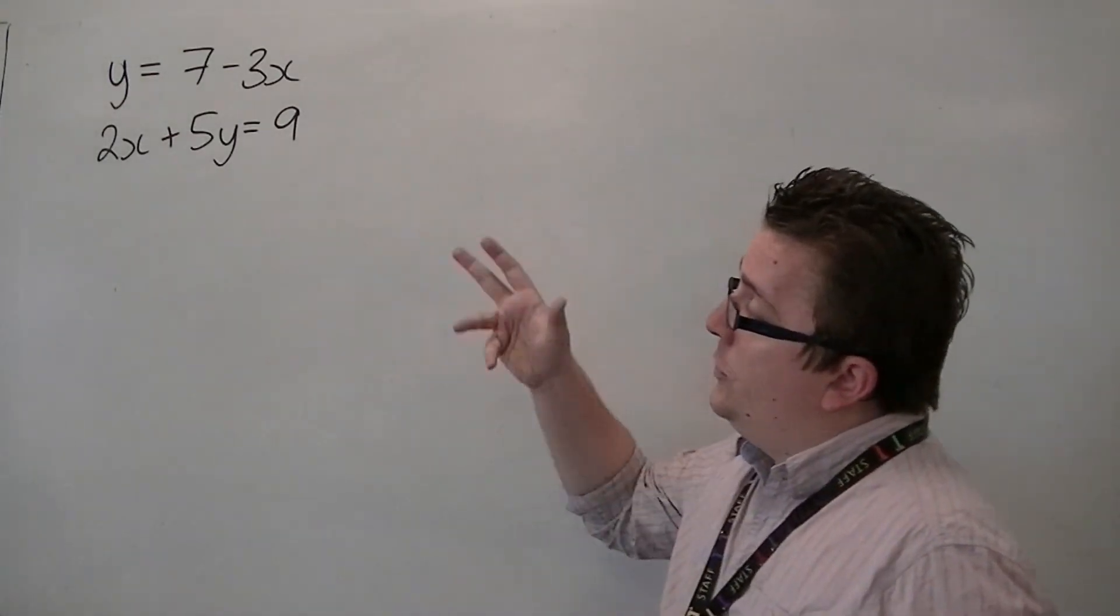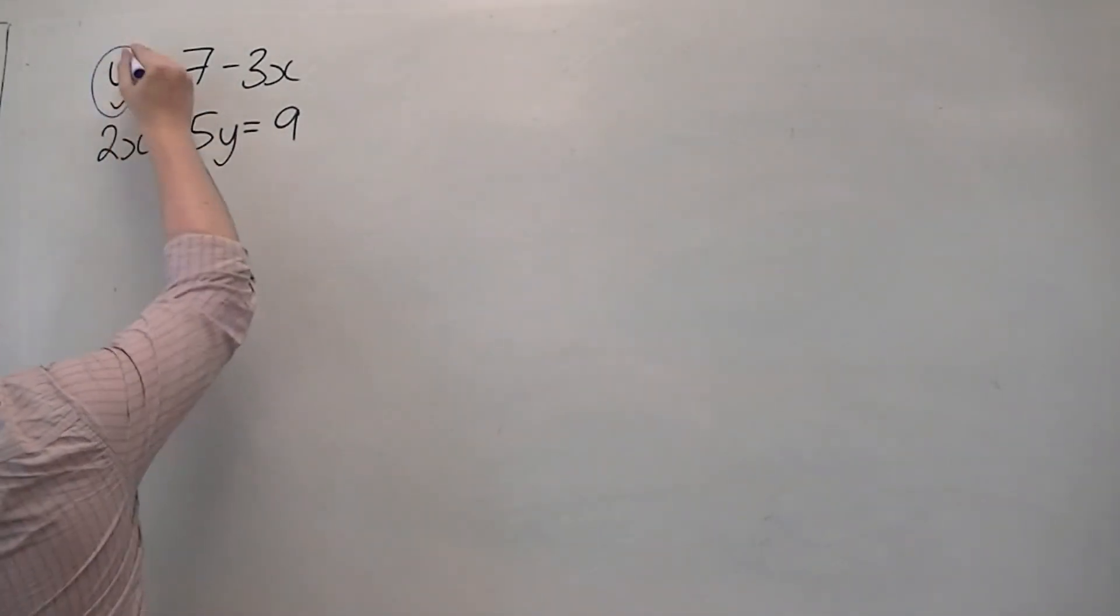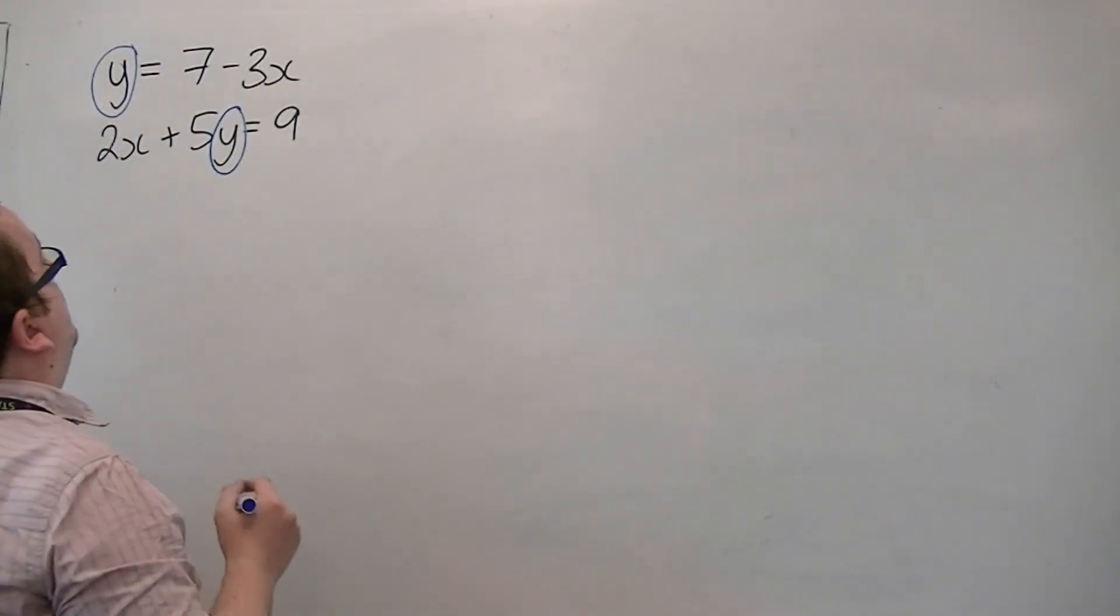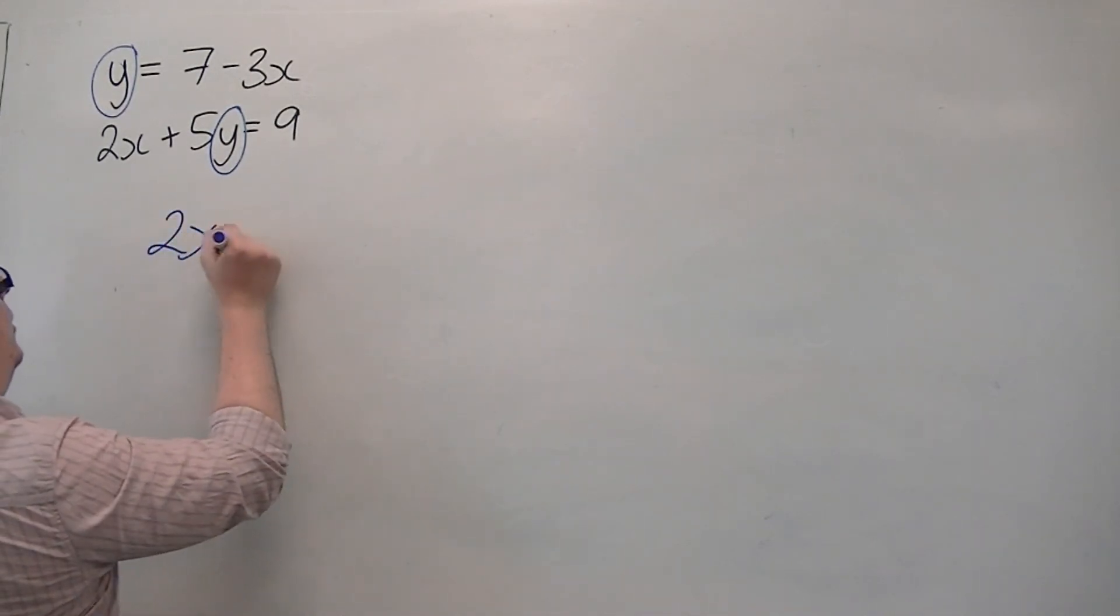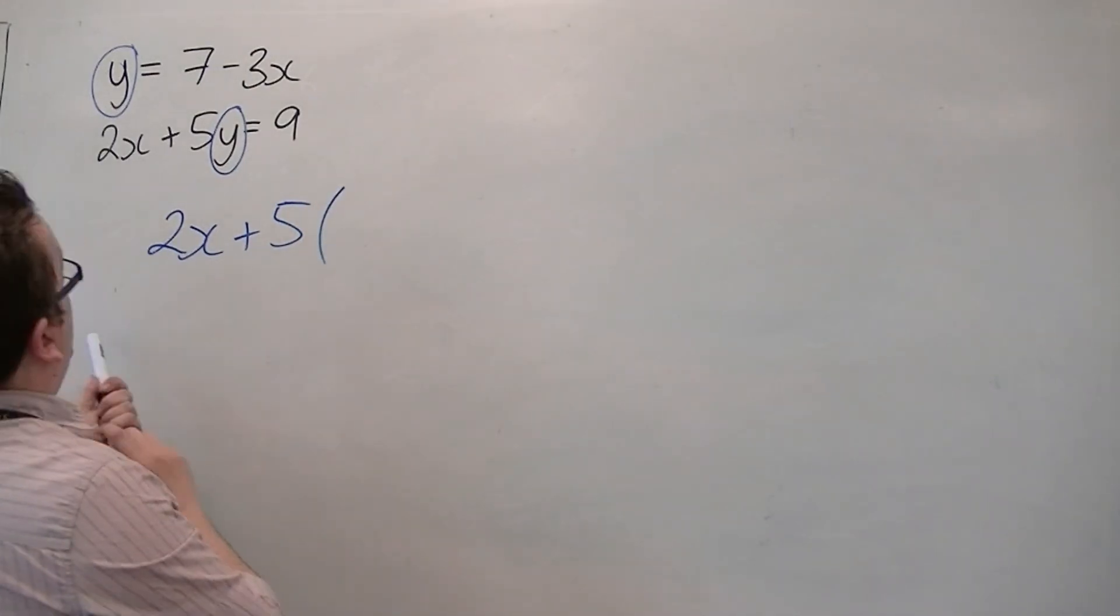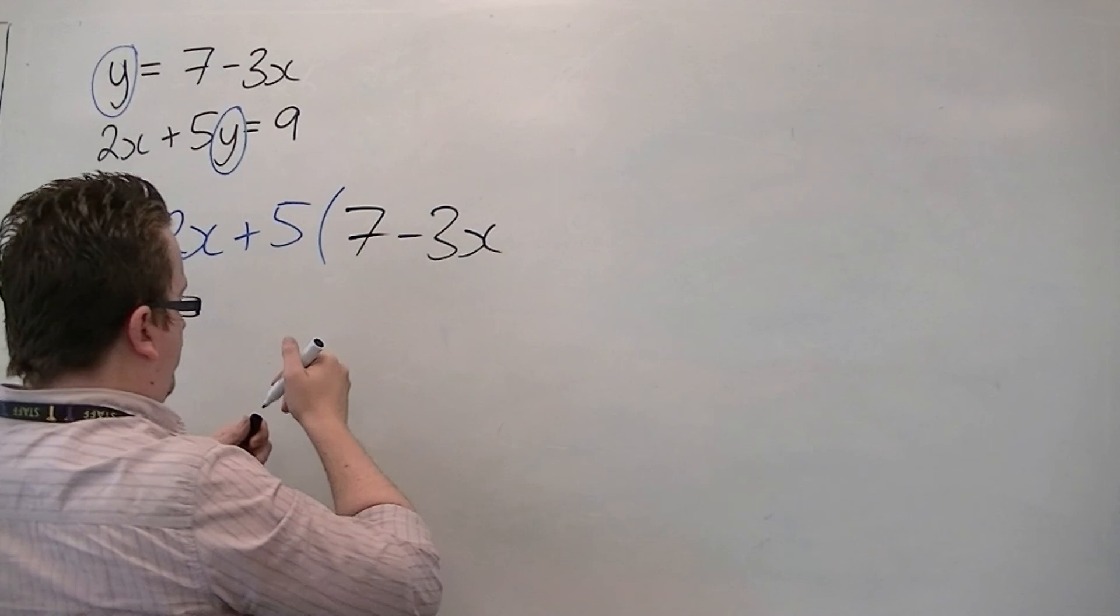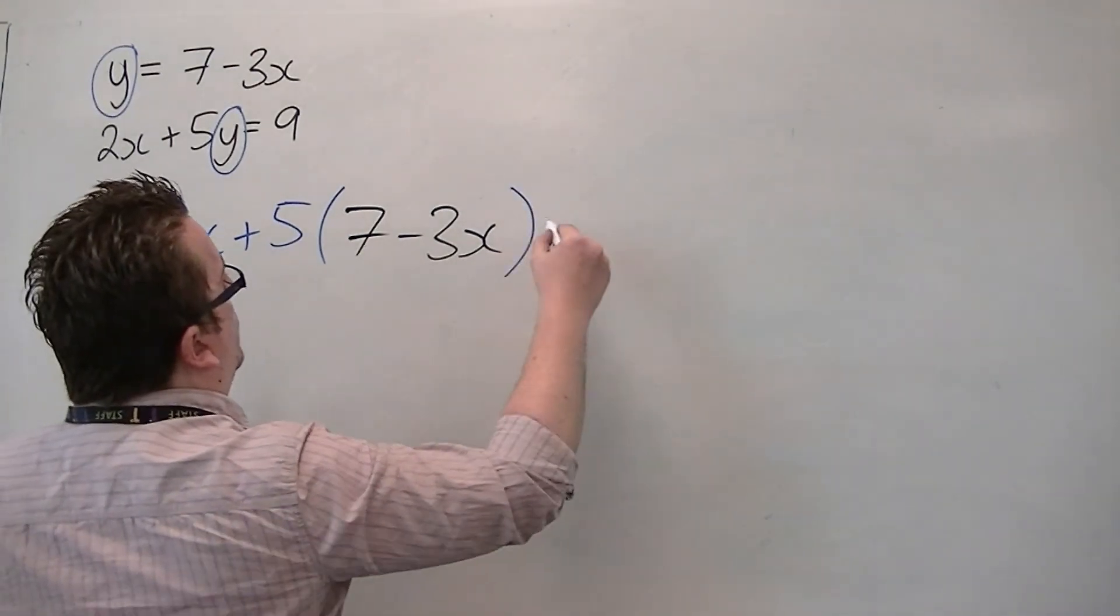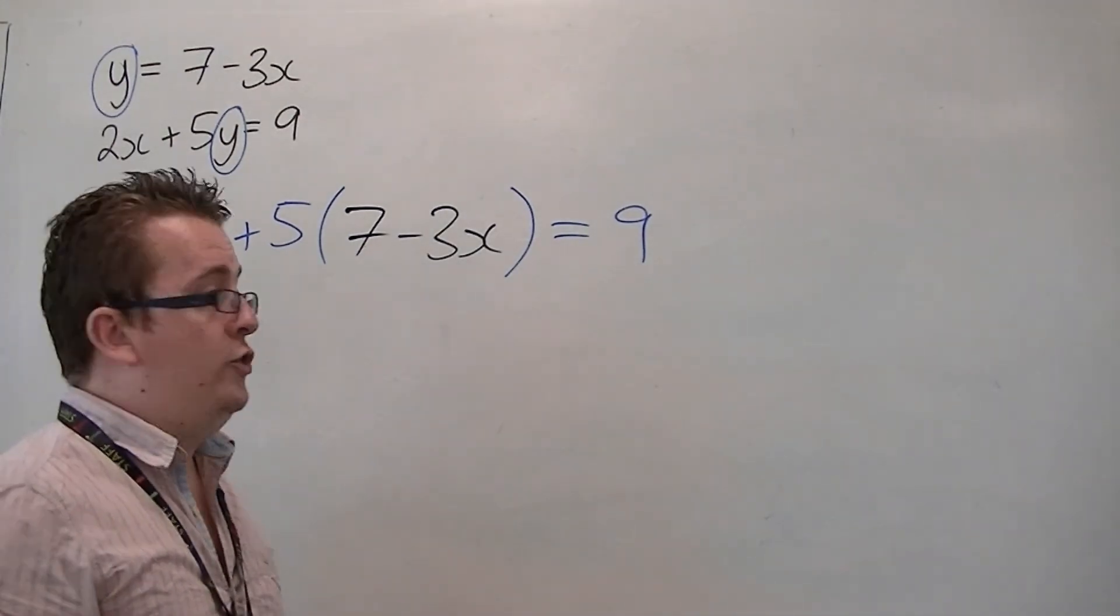So, in doing this, what it's saying is that if y equals 7 minus 3x, then this y, this y must be the same. So what we can say is we can write 2x plus 5 lots of y, which we have been told is 7 minus 3x, is equal to 9. So we're substituting this equation into the second equation.